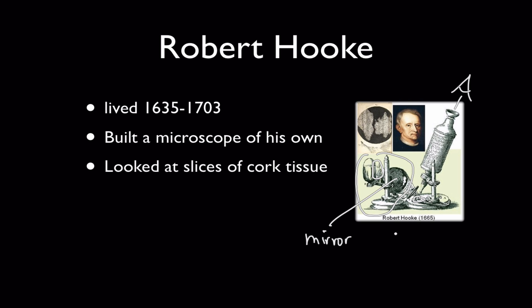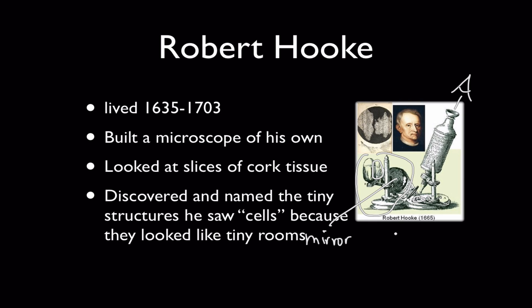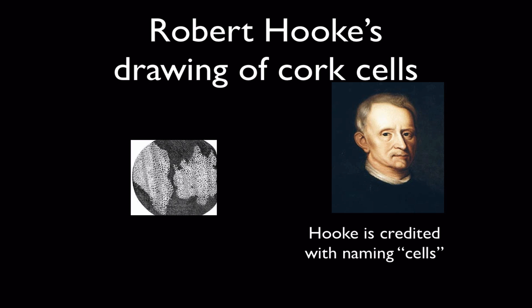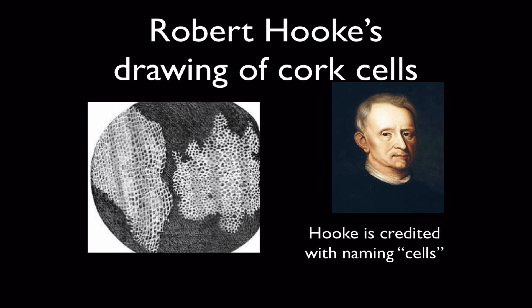But he was able to look at slices of cork, which is the tree bark from a special kind of oak tree — like the corks in wine bottles or cork flooring. He discovered that cork contains very tiny, very regular structures that looked to him like jail cells or the cells monks live in at a monastery, and he named them cells. Here's a picture of Robert Hooke — he gets credit for coining the word 'cells' in a biological context, and this drawing is from his actual notebooks, which still survives.